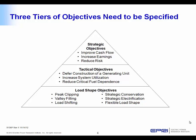There are three tiers of objectives that need to be specified. One is a strategic objective — either improving cash flow or reducing risk. From those derive tactical objectives, which might be to defer the construction of a generating unit, to increase system utilization, or to reduce dependence on a critical fuel. And sorting through those, I've categorized six possible load shape objectives: peak clipping, valley filling, load shifting, strategic conservation, strategic electrification, and flexible load shape — or reliability, as I may call it later.